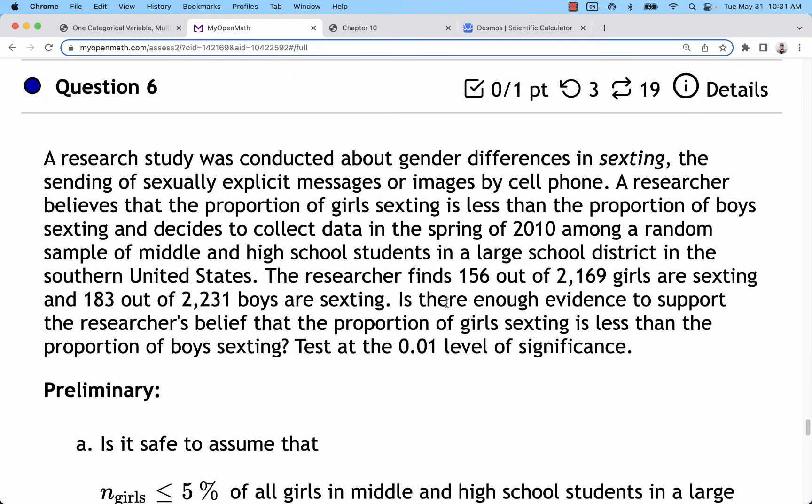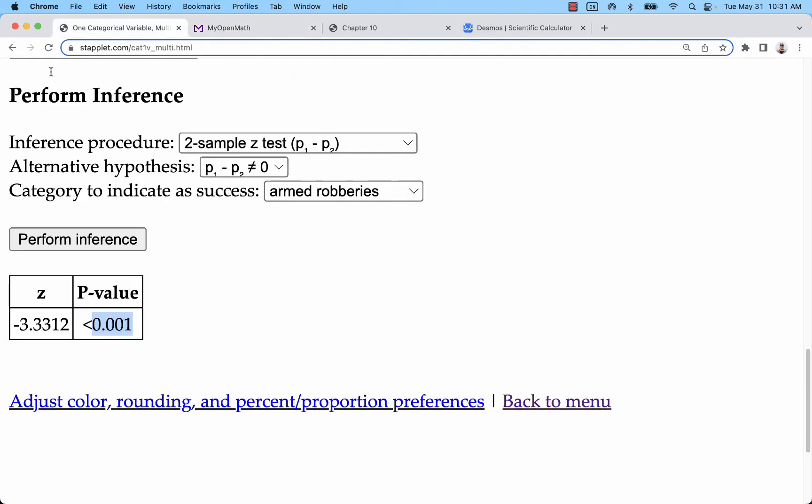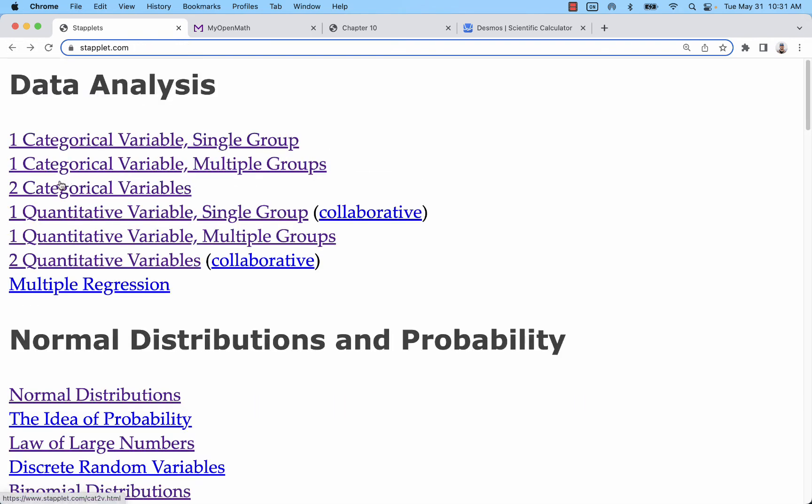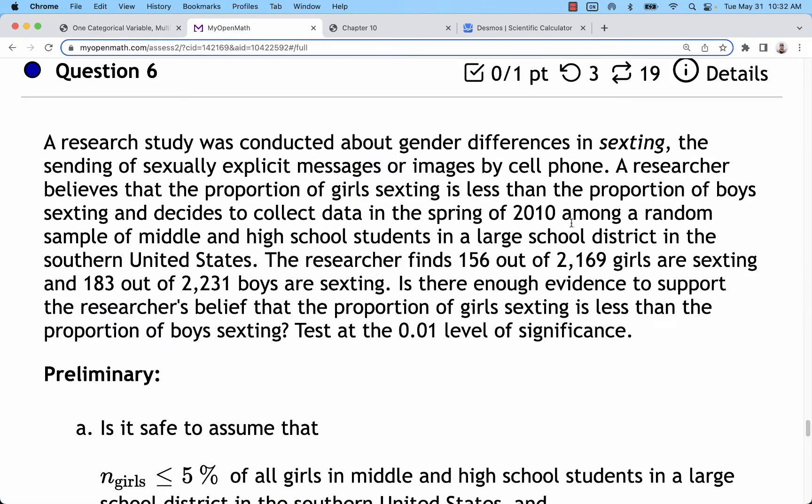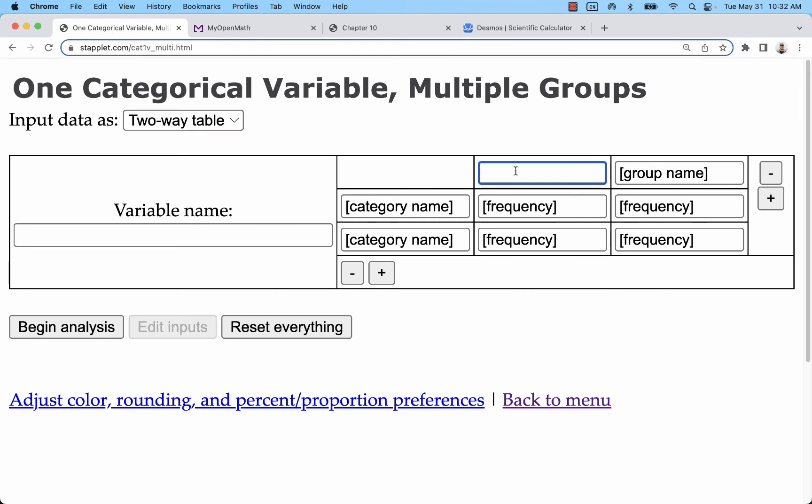One more example here. This one is also going to be one categorical multiple groups. We are not going to enter raw data for any of these problems because they've already been summarized. In this one, we have gender differences. We're looking at groups of boys and girls for their texting habits.